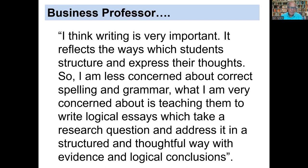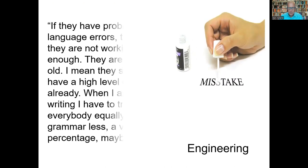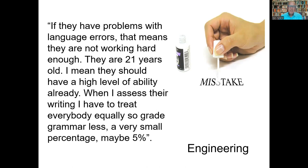For teachers in the sciences, writing was less important, and the fact that students were writing in a second language was often treated as a minor issue. This engineering professor said: if they have problems with language errors, that means they're not working hard enough. They're 21 years old — they should have a high level of ability already. When I assess their writing, I treat everybody equally. I grade grammar less — a very small percentage, maybe 5%. So instead of blaming their second language backgrounds, tutors were more likely to refer to their lack of experience in the genres they were being asked to write.